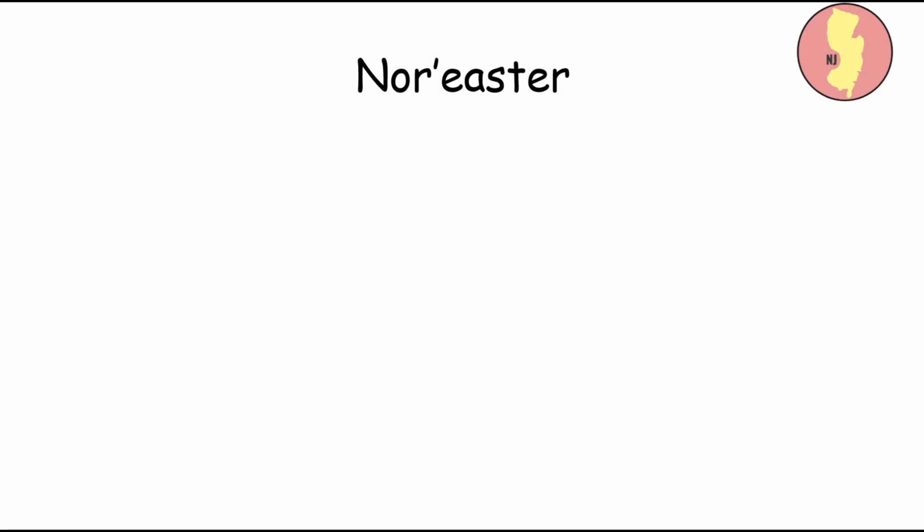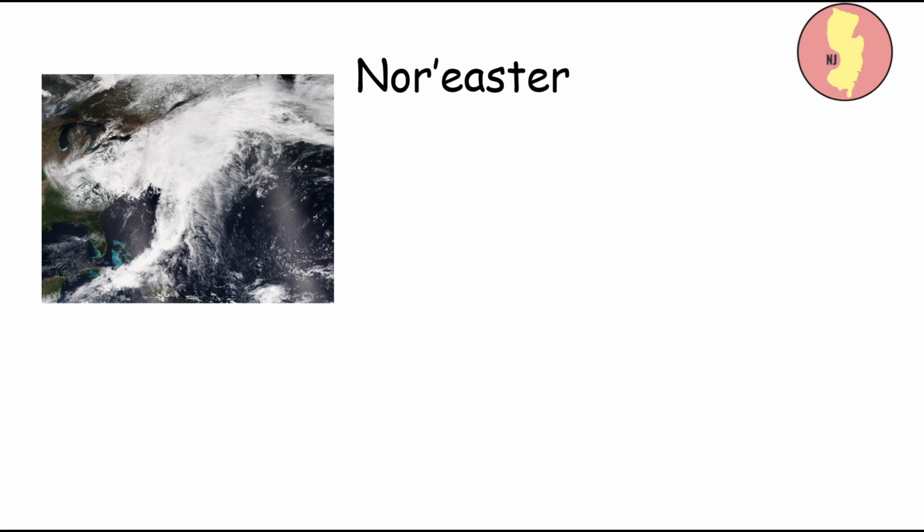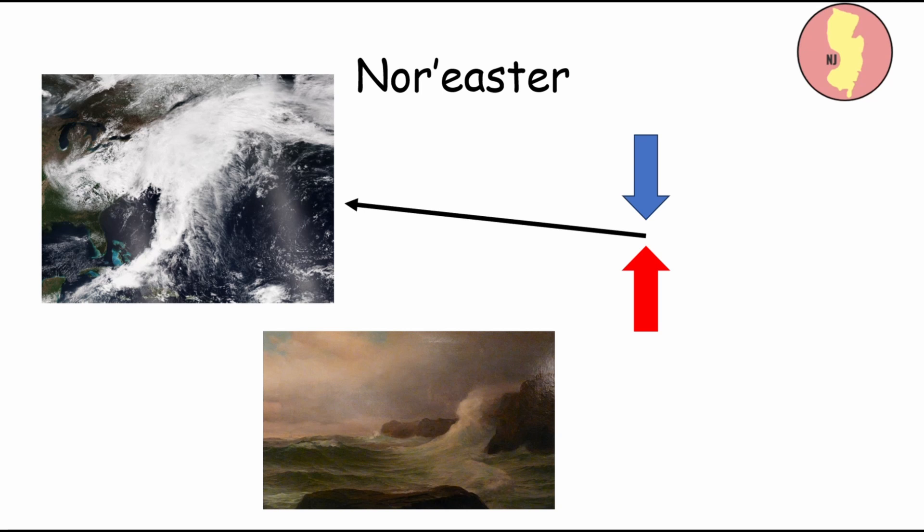A nor'easter is a powerful extratropical cyclone that affects the northeastern United States, particularly along the east coast. These storms typically form when cold air from the north meets warm air from the Atlantic Ocean, creating a strong temperature gradient and atmospheric instability. Nor'easters are characterized by strong northeasterly winds blowing in from the ocean, heavy precipitation, and coastal flooding due to storm surges. They bring a variety of precipitation types, including rain, snow, sleet, and freezing rain, depending on the temperature profiles at the surface. Nor'easters can have significant impact on transportation, infrastructure, and communities, often causing widespread damage.